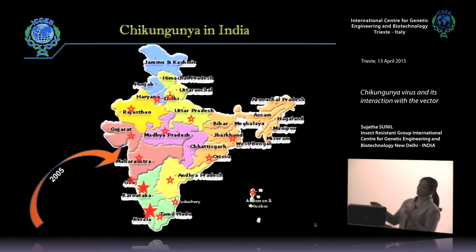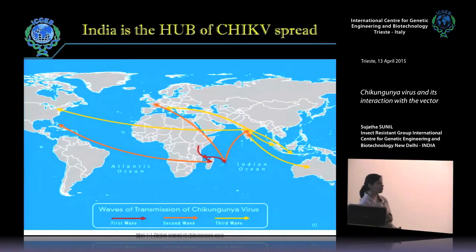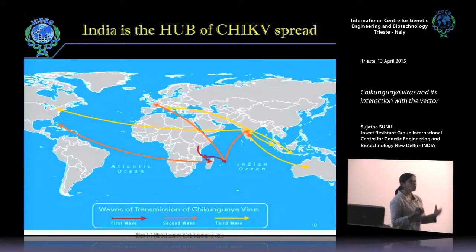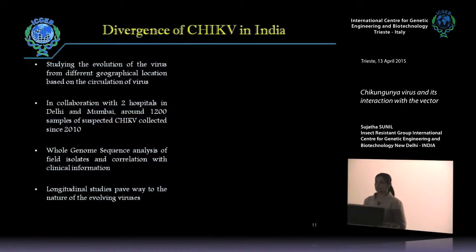As of 2010, almost all of India has been affected except for a cluster in the north because of climatic and physical barriers. What makes it particularly important is that India is a hub of chikungunya spread. When the first wave came from the Indian Ocean islands into India, subsequent spread has been happening outward from India, making it very important to understand the structure of the virus within the country.